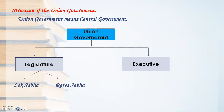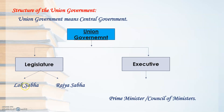In the legislature, you have Lok Sabha and Rajya Sabha. In the executive, you have Prime Minister and Council of Ministers. Legislature is the department of the government that makes laws. It is done by the houses like Lok Sabha and Rajya Sabha. Therefore they come under the legislature — the people who make laws.